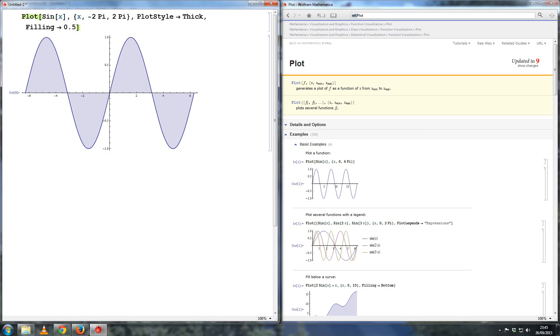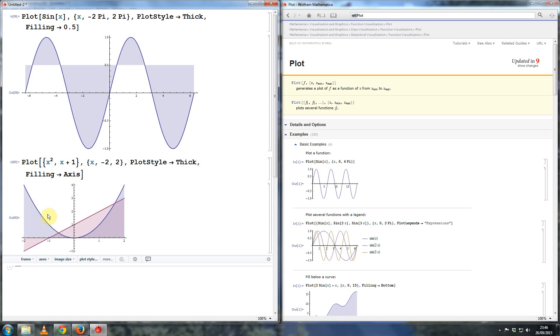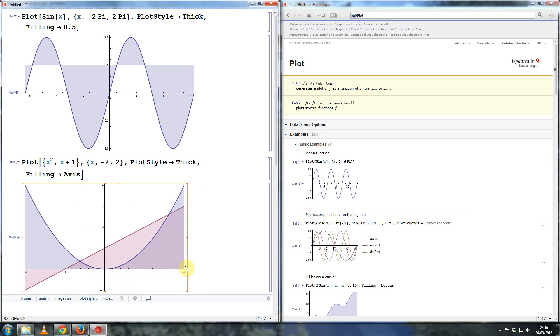If I change this to a number, say 0.5, then it will shade the area until that y value, up to 0.5. So if I wanted to shade the area between two curves, so what we'll do is, let's say, take two functions, something like say x squared and x plus one. And so I'm going to plot these two graphs, x squared and x plus one. Let's say we plot them from minus two to plus two. And I'll leave the filling as axis for now. OK, so this plots the two graphs. This is your quadratic function and the line y equals x plus one. And it has shaded the area all the way up to the x axis, both above and below the curve.